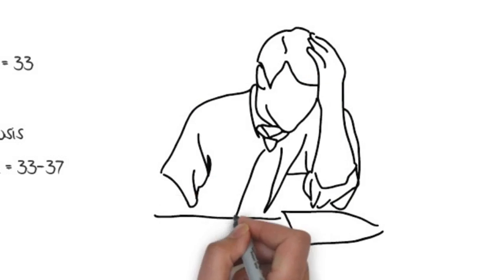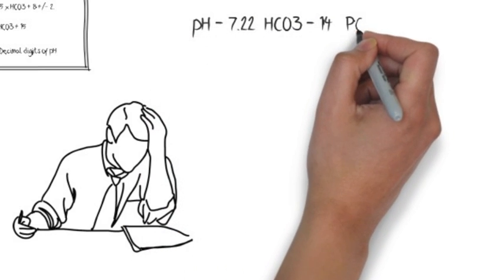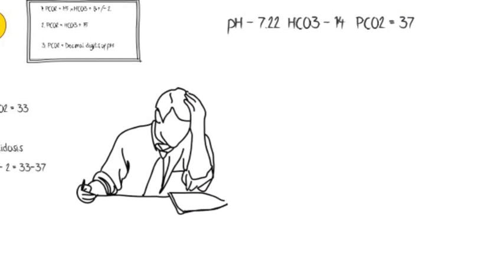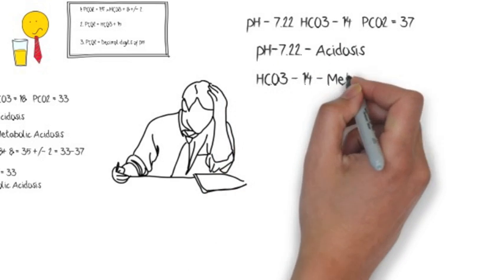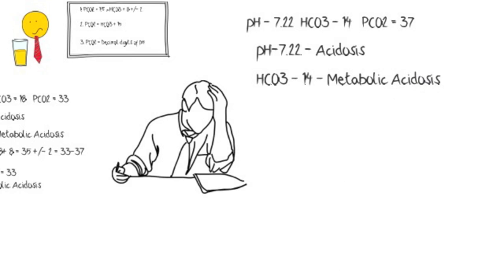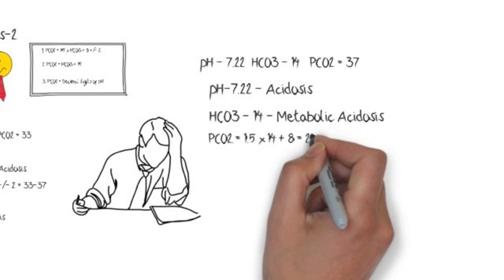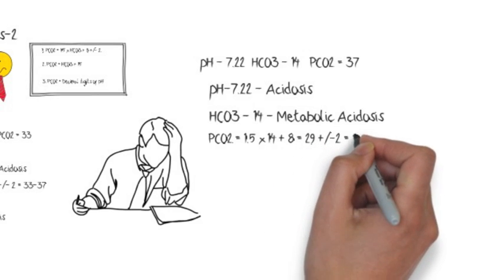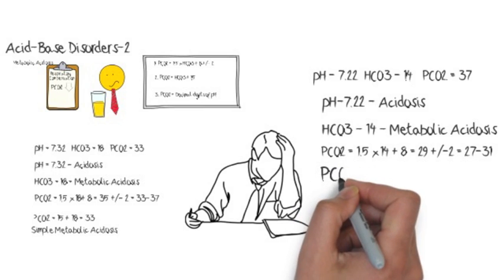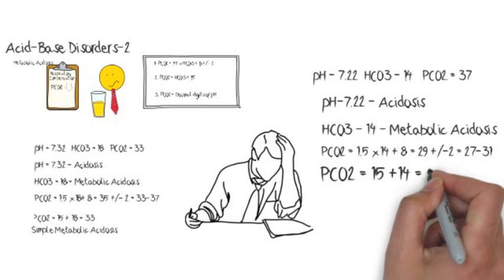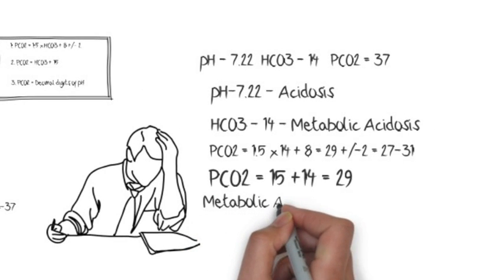In the next ABG, pH is low, bicarb is also low — metabolic acidosis — and pCO2 is 37. Using the Winters equation, expected pCO2 should be 27–31, but pCO2 is 37, which is way too high, so it is not appropriately compensated. Using bicarb + 15 gives 29, and the actual pCO2 is 37, confirming it is not appropriately compensated.